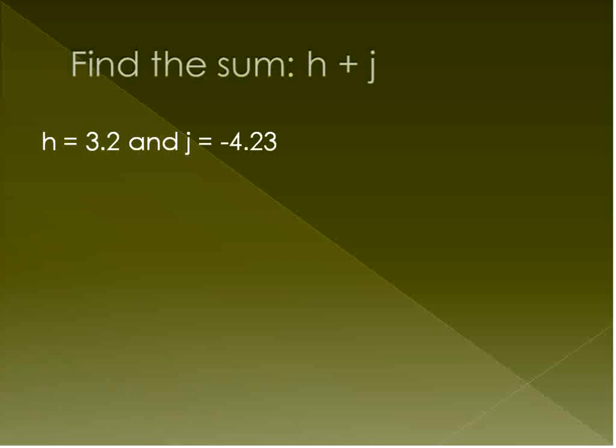So we're asked to find the sum of h plus j. H is 3.2, J is negative 4.23. Now, we know the signs are different. Signs are different, so we're going to find the difference between them. 3.2 plus negative 4.23, it's the same thing as 3.2 minus 4.23. In other words, we're finding the difference. So let's just line those up. We line up the decimals. And this is the one step that I didn't mention before. If there's ever any blanks here, you just fill them in with zeros. It's a pretty straightforward step. You just need to have something there. So 3.20 is the same as 3.2. Just fill it in with zeros. Now we're ready to subtract.